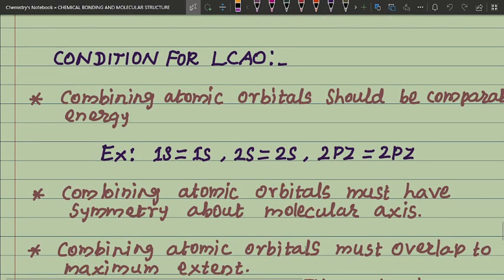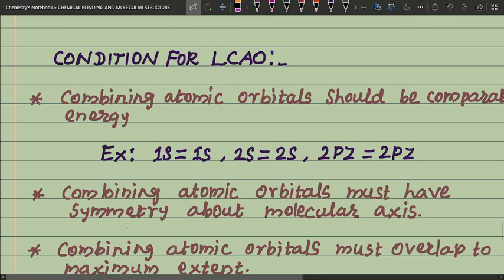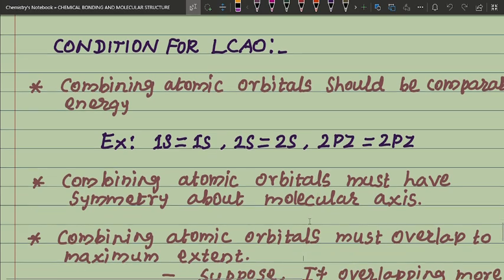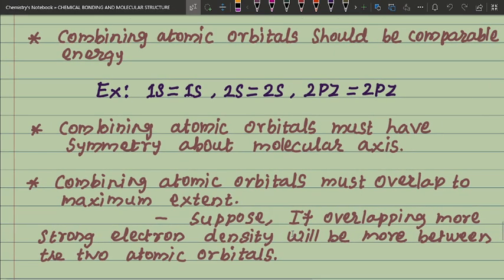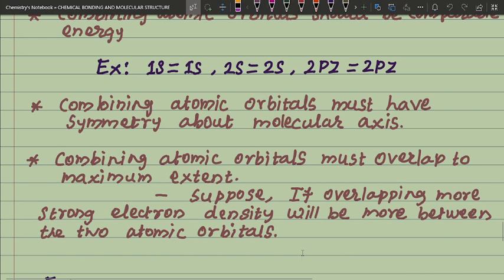Conditions for LCAO: first, combining atomic orbitals should have comparable energy. Second, combining atomic orbitals must overlap to the maximum extent. If overlapping is stronger, electron density will be greater between the two atomic orbitals.